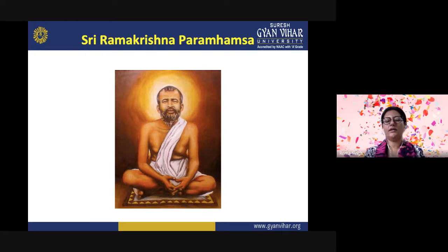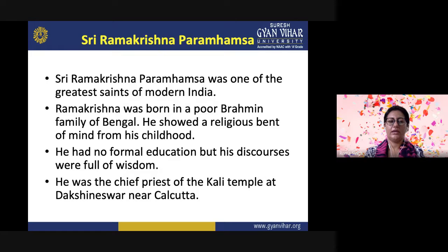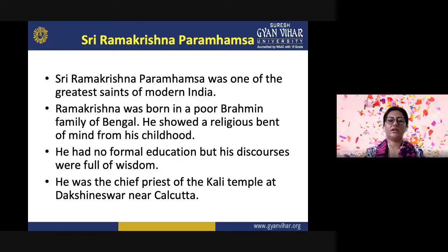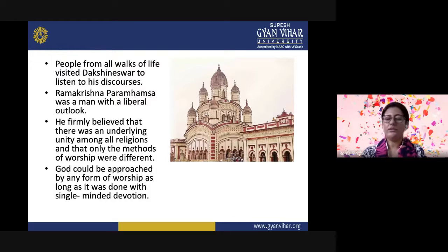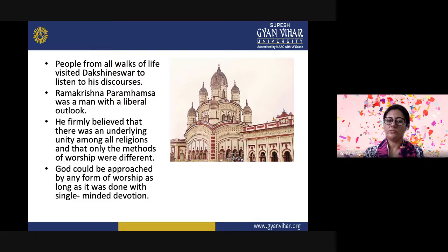Now we will discuss Sri Ramakrishna Paramahansa, one of the greatest saints of modern India. Ramakrishna was born in a poor Brahmin family of Bengal. Though he had no formal education, his discourses were full of wisdom. He was the chief priest of the Kali temple at Dakshineshwar near Calcutta. People from all walks of life visited Dakshineshwar to listen to his discourses. Ramakrishna Paramahansa was a man with a liberal outlook. He firmly believed that there was an underlying unity among all religions, and that only the methods of worship were different. God could be approached by any form of worship as long as it was done with single-minded devotion.